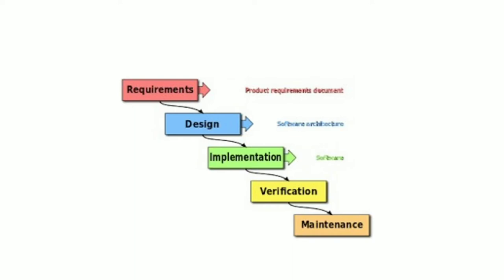The waterfall model is a sequential design process used in software development in which progress is seen as flowing steadily downwards like a waterfall through the phases of conception, initiation, analysis, design, construction, testing, production, implementation, and maintenance. It originated in the manufacturing and construction industries having highly structured physical environments in which after-the-fact changes are prohibitively costly, if not impossible.